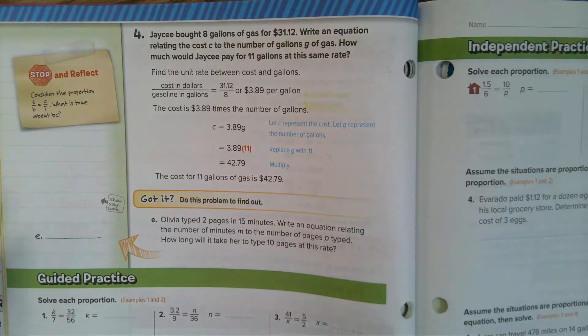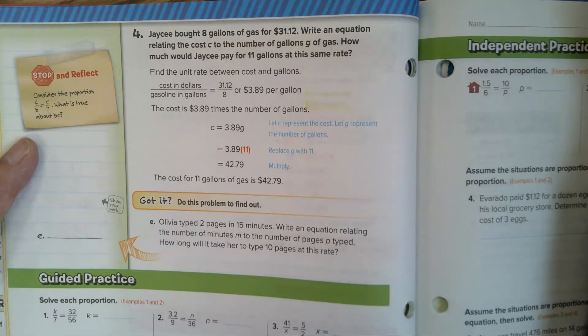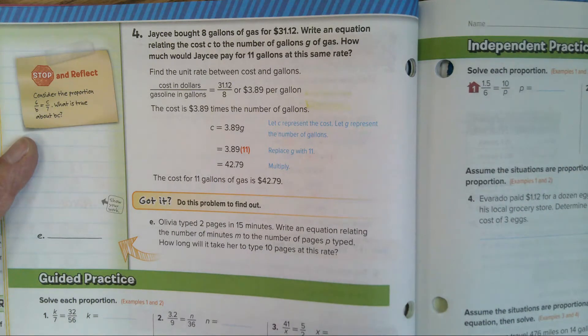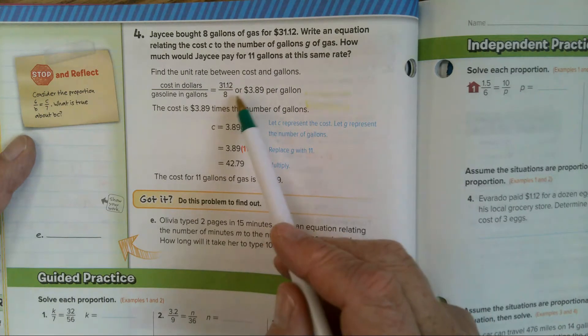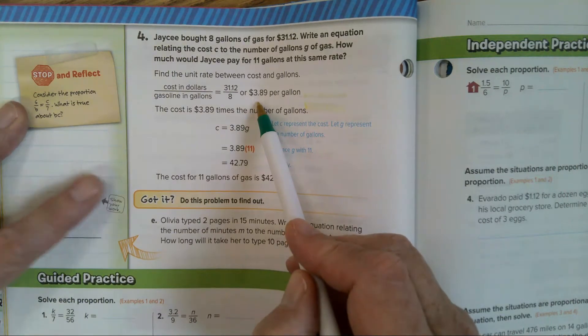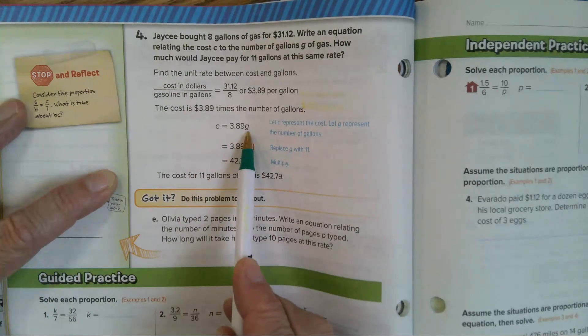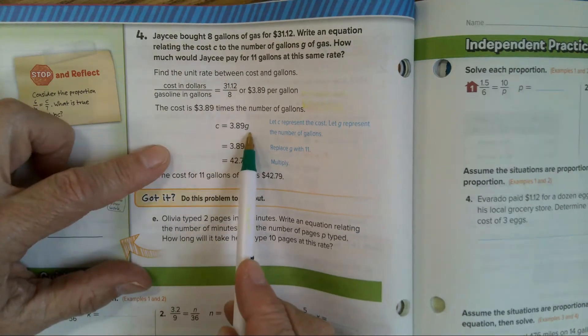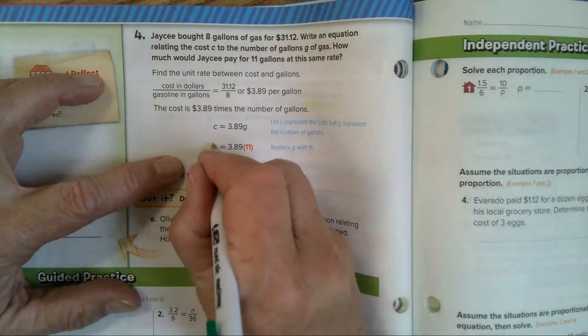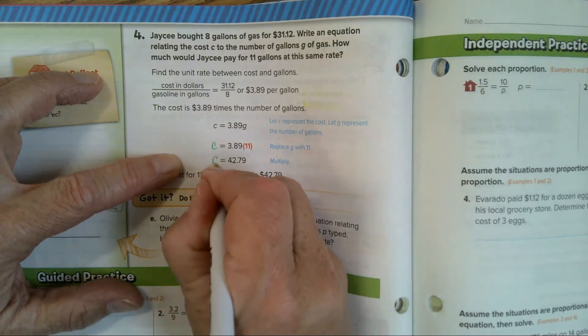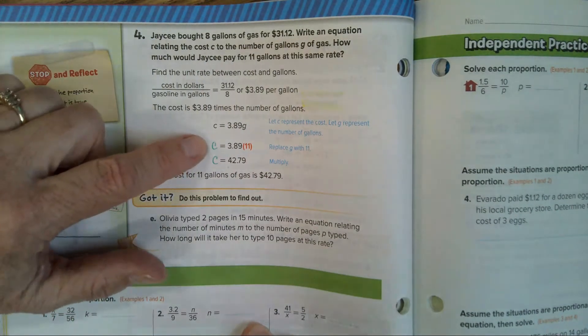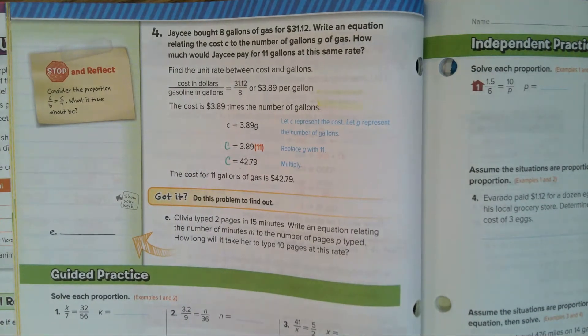On page 58, example 4. JC bought 8 gallons of gas for $31.12. Write an equation relating the cost, C, to the number of gallons, G, of gas. Here they're telling you which variables to use. How much would JC pay for 11 gallons at the same rate? So first you find the unit rate. How much is it for 1 gallon? Well, $31.12 divided by 8 equals $3.89 for 1 gallon. Now our equation: cost equals unit rate times gallons. So that's your little equation there. They forgot their C there. How many gallons are you getting? 11. So you take this times 11 and your cost, C, equals $42.79. Make sure you put the variable C in the problem.